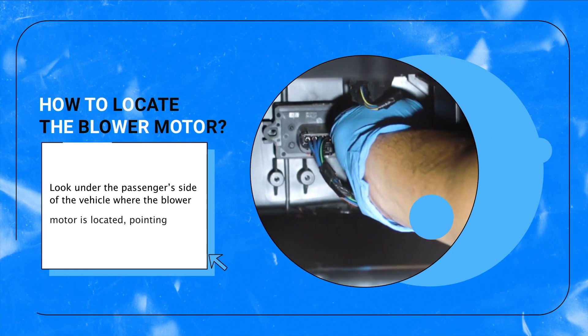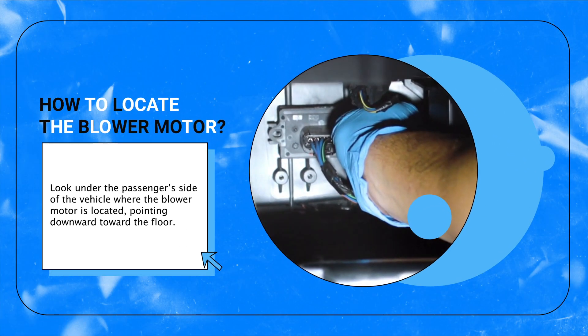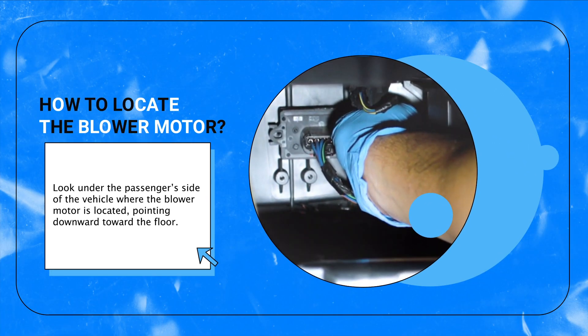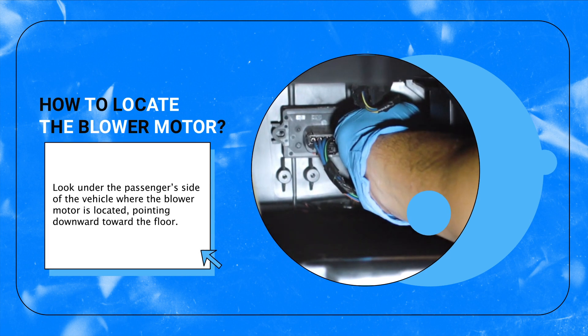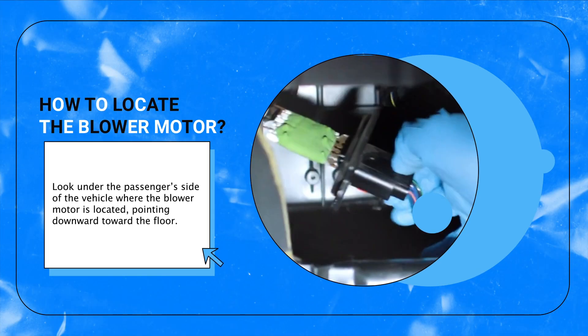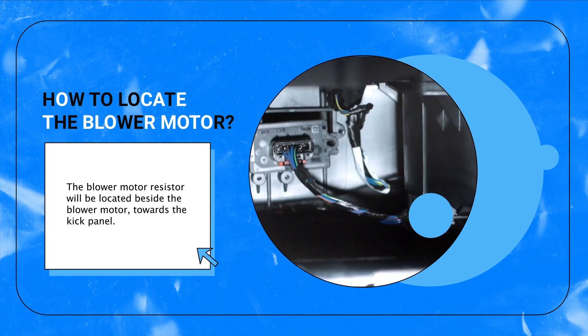Look under the passenger side of the vehicle where the blower motor is located, pointing downward toward the floor. The blower motor resistor will be located beside the blower motor, towards the kick panel.